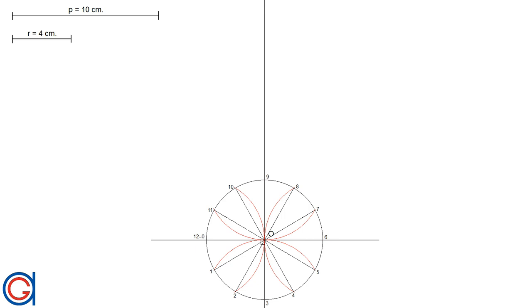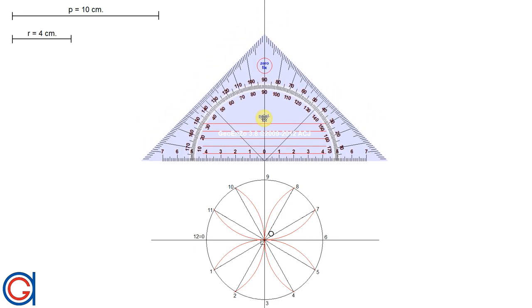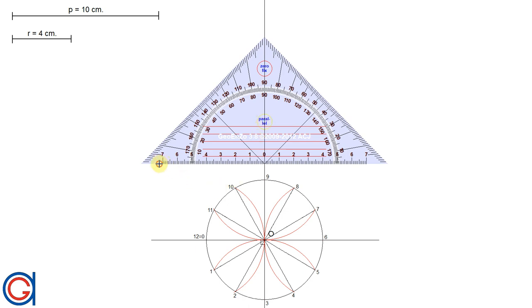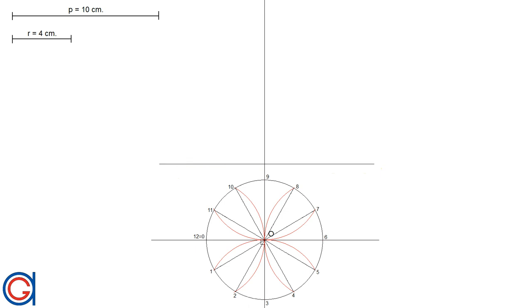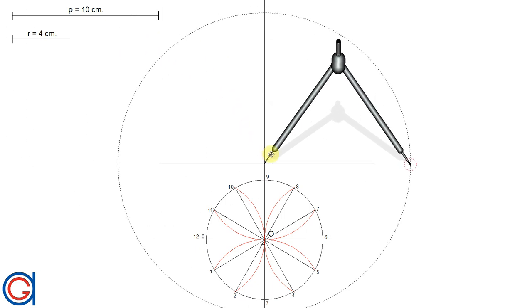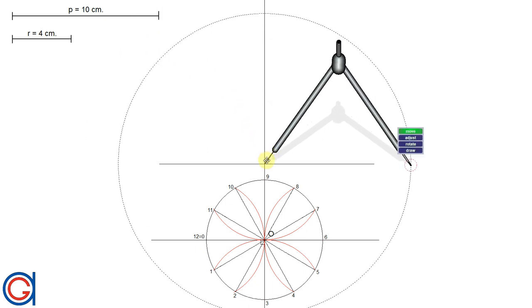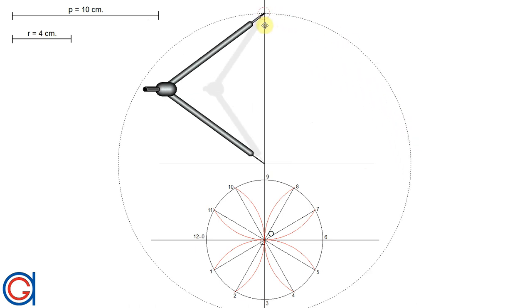We are going to start by drawing the horizontal line that represents the bottom of the cylinder. Now setting our compass to the length of the given pitch which is 10 centimeters, we are going to transport this height onto the vertical axis to represent the total height of the cylinder with another horizontal line.